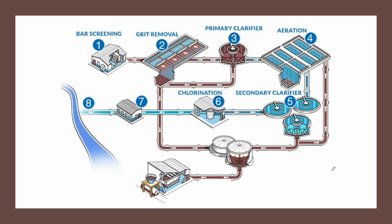Treating wastewater is a complex process involving many stages. We start with bar screening — the physical removal of any coarse material such as tree branches and stones. Then grit removal — the removal of other coarse material like sand and eggshells. Next, we go through the primary clarifier, which is a sedimentation tank to reduce suspended solids. This is where solids settle down, producing sludge that must be further treated.